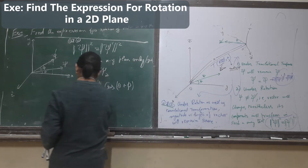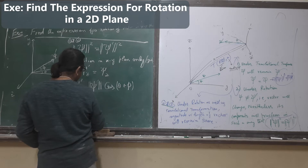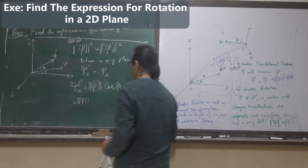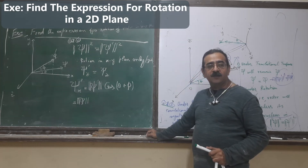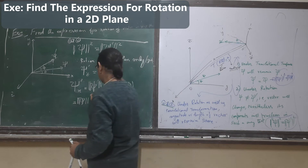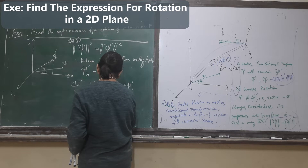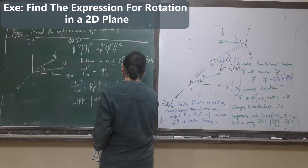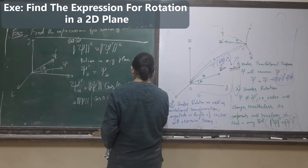And what is the double angle formula? Psi bar cos theta is equal to cos theta cos phi minus sin theta sin phi.